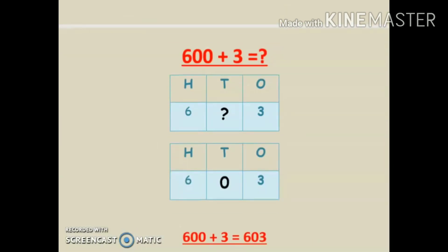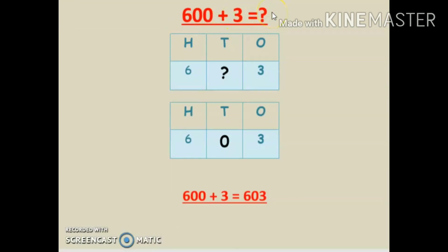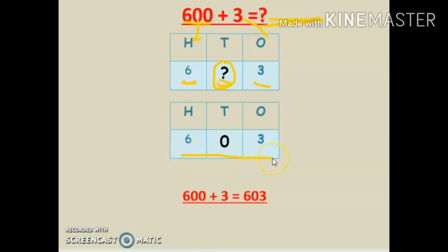Another example: six hundred plus three — write the short form. Assign the positions: hundreds, tens, and ones. Six hundred goes under hundreds. There are no tens, so we leave that position and put zero because zero has no value. Three goes under ones. The number is six hundred three. Short form of six hundred plus three is six zero three.